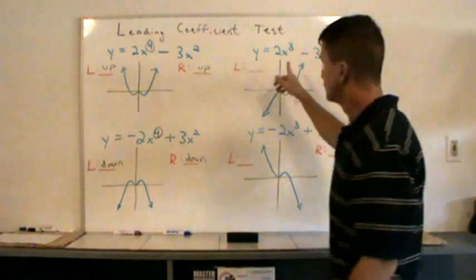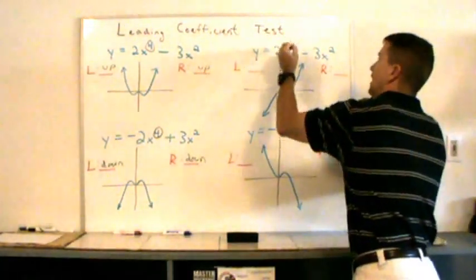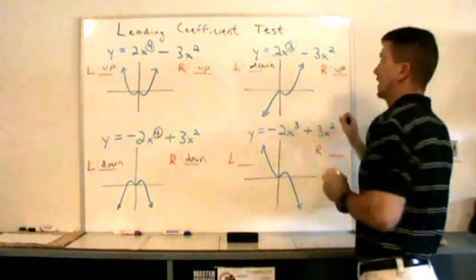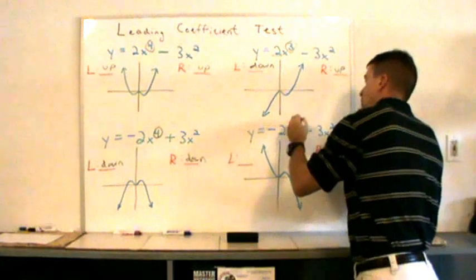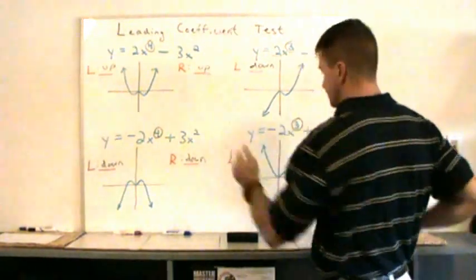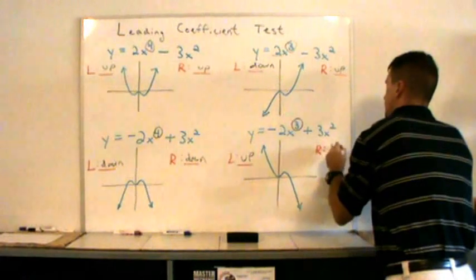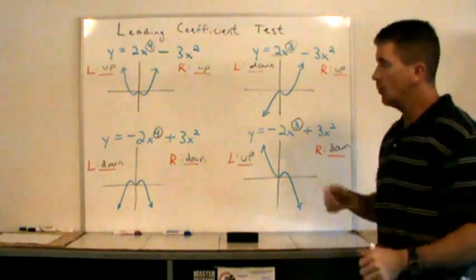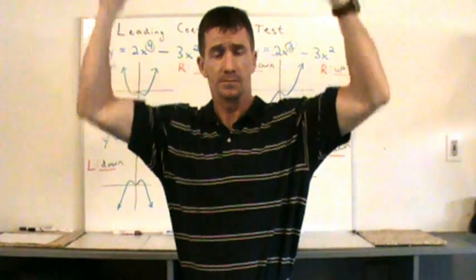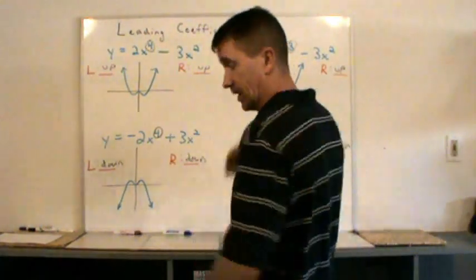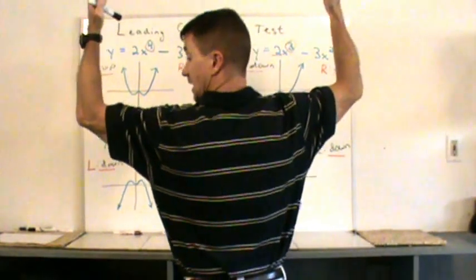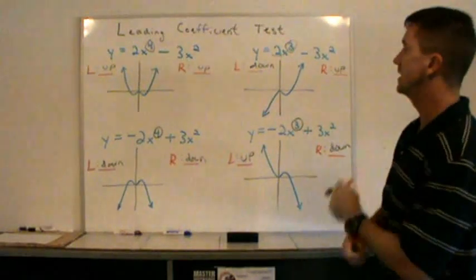Now, what if the highest exponent is odd and it's positive? Then the left arm will be down and the right arm will be up, as you can see in this example. What helps you remember the leading coefficient test is just two functions: y = x² and y = x³. Because y = x³ looks like this, y = -x³ looks like that, y = x² looks like this, and y = -x² looks like this.